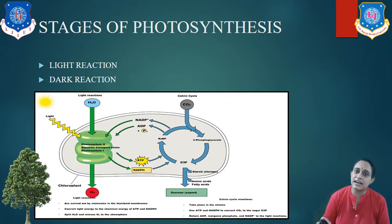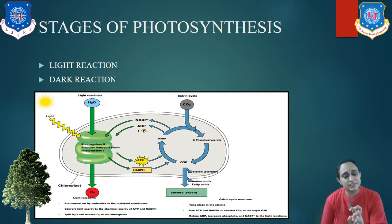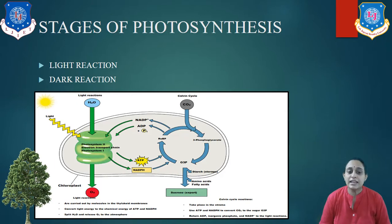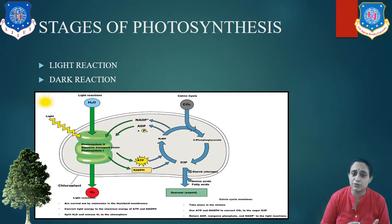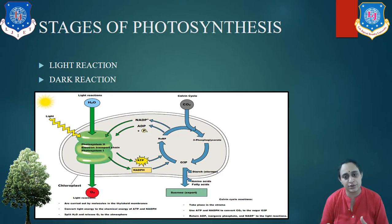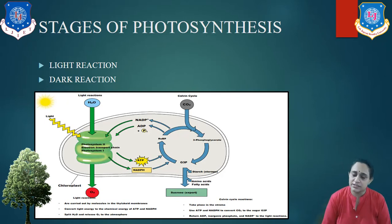The dark reaction does not require light — the word 'dark reaction' means it does not require light. In this process, the plant absorbs carbon dioxide through the leaves and creates sugar in the form of complex carbohydrates. Both processes can be seen in the diagrams.